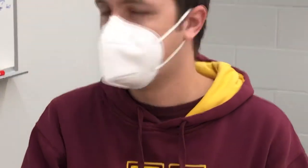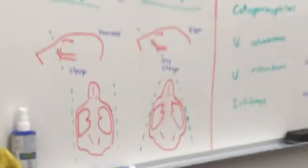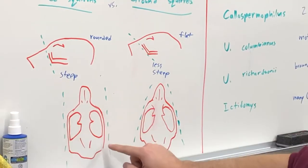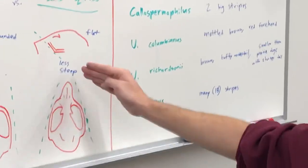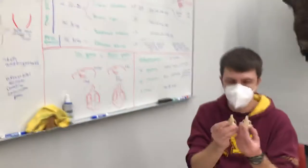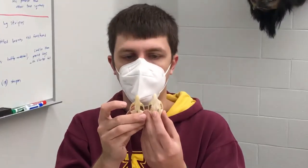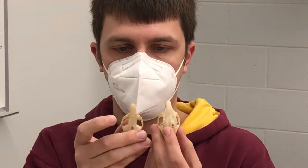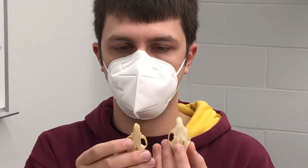The last thing, and this is probably the most useful: the zygomatic arches are parallel in tree squirrels and angled in ground squirrels. Holding up these two skulls of similar size, you can see here these relatively parallel lines versus this one, which is angling towards the nose.